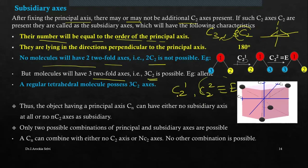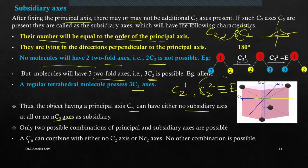Three twofold axes are possible, and that is what we have seen in allene. A regular tetrahedral molecule like CH4 also possesses three C2s — one passing through the X axis, one through the Y axis, and one through the Z axis. Thus, an object having a principal axis CN can have either no subsidiary axes at all, or exactly N C2 axes as subsidiary axes.